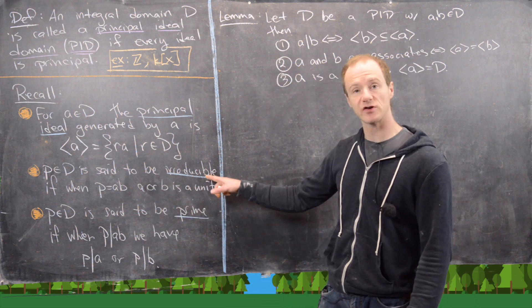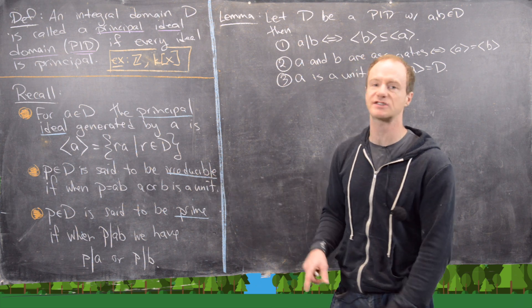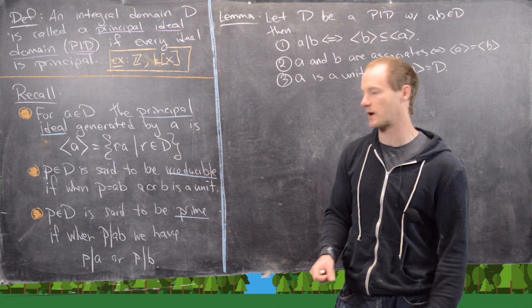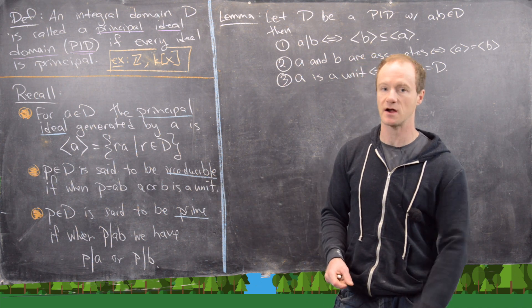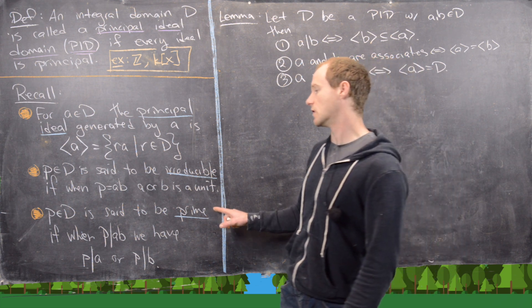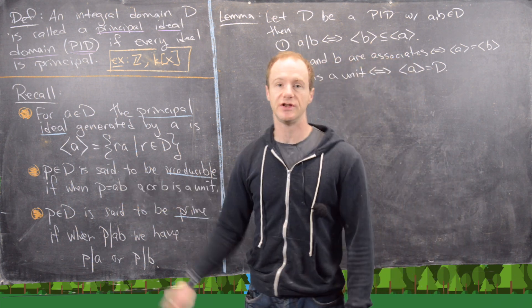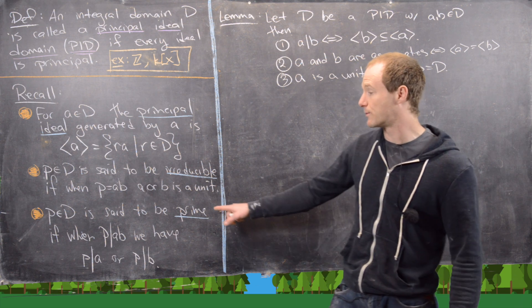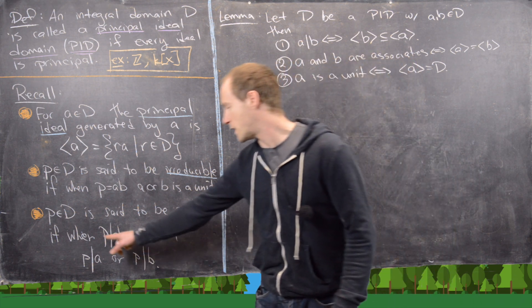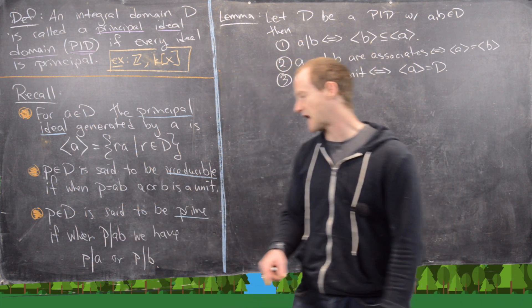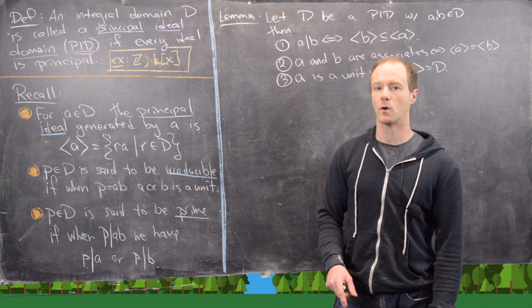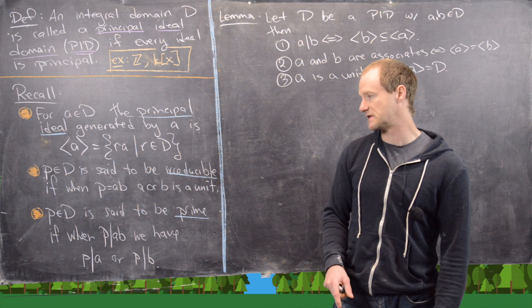An important subtle point is that P starts off being a non-unit. Also, a non-unit P is said to be prime if when P divides AB, we have P either divides A or P divides B.